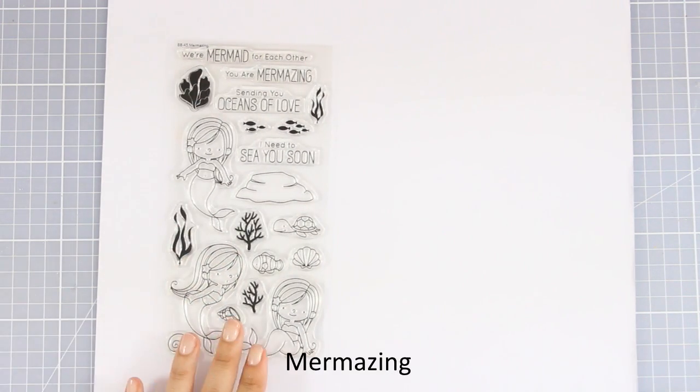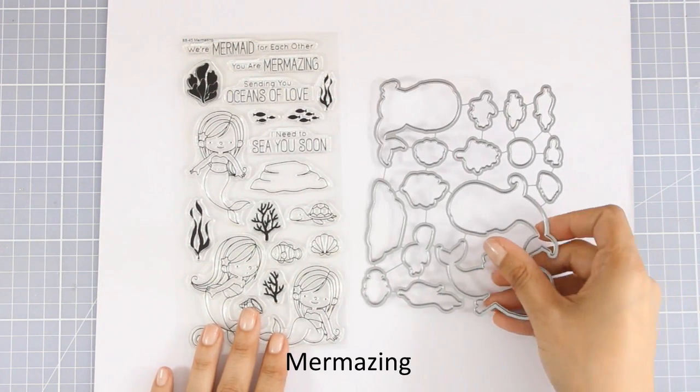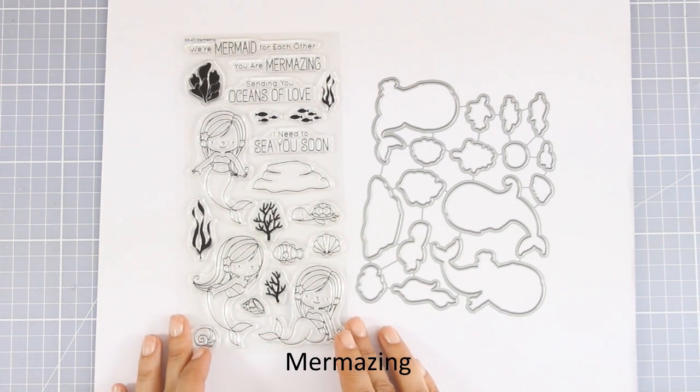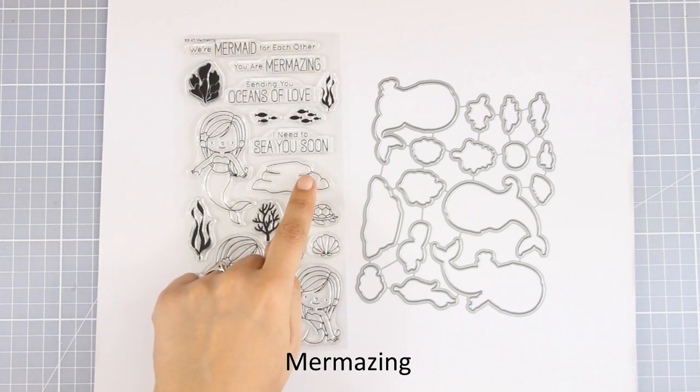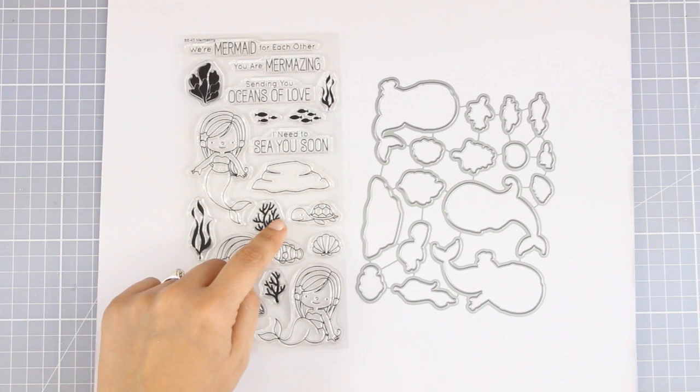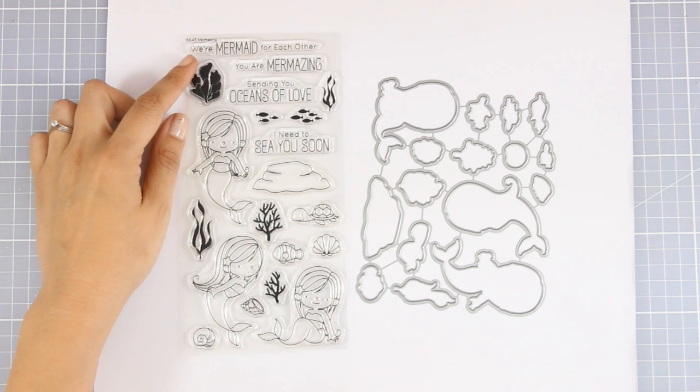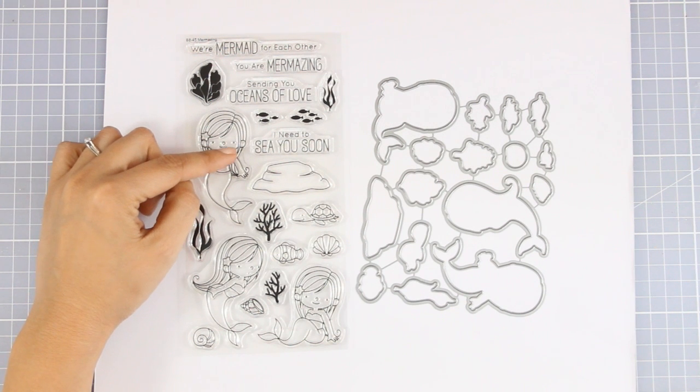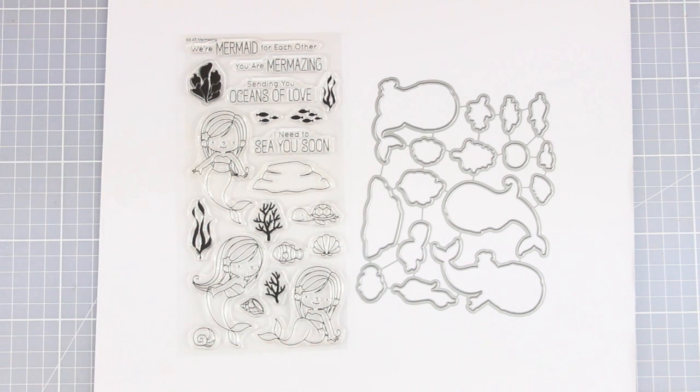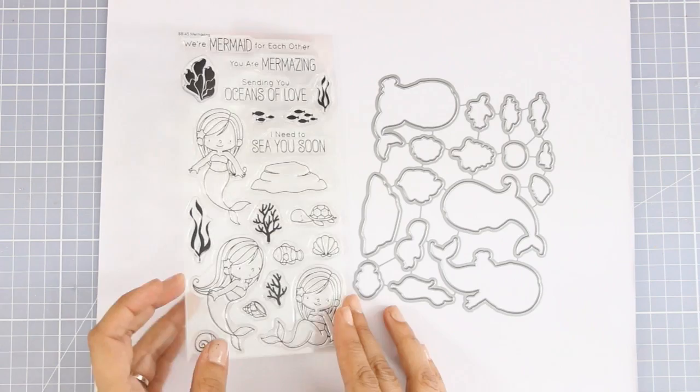And here is another 4x8 large stamp set. This is called Mermazing. It's one of my favorites from this release and I know this is going to be one of your favorites too. There are adorable mermaids - three different designs - little props to make your underwater scene, and lovely sentiments such as 'We are mermaid for each other' and 'You are mermazing.' Really, these mermaids couldn't be more adorable.